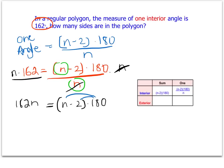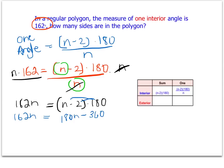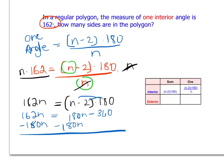Now I distribute that 180: 180 times n is 180n, and 180 times negative 2 is negative 360. To get all the n terms on one side, I subtract 180n from both sides, giving me negative 18n equals negative 360. Then I divide both sides by negative 18, and the negatives cancel, leaving me with 360 divided by 18, which is 20.